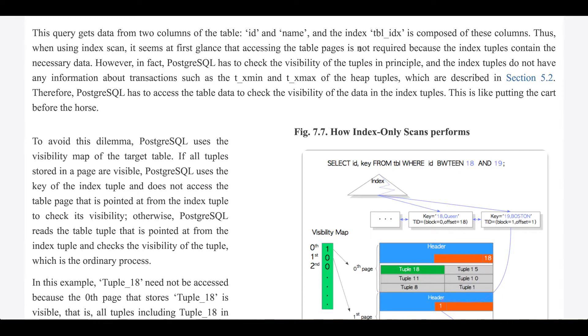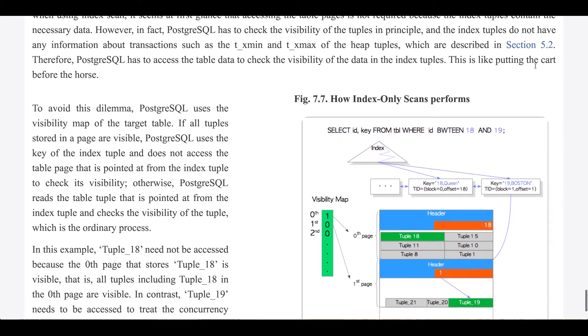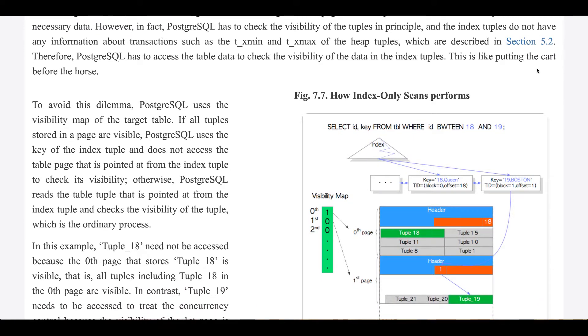Thus, when using index scan, it seems at first glance that accessing the table pages is not required because the index tuples contain the necessary data. However, in fact, Postgres has to check the visibility of the tuples in principle, and the index tuples do not have any information about transactions such as the t_xmin and t_xmax of the heap tuples, which are described in section 5.2.